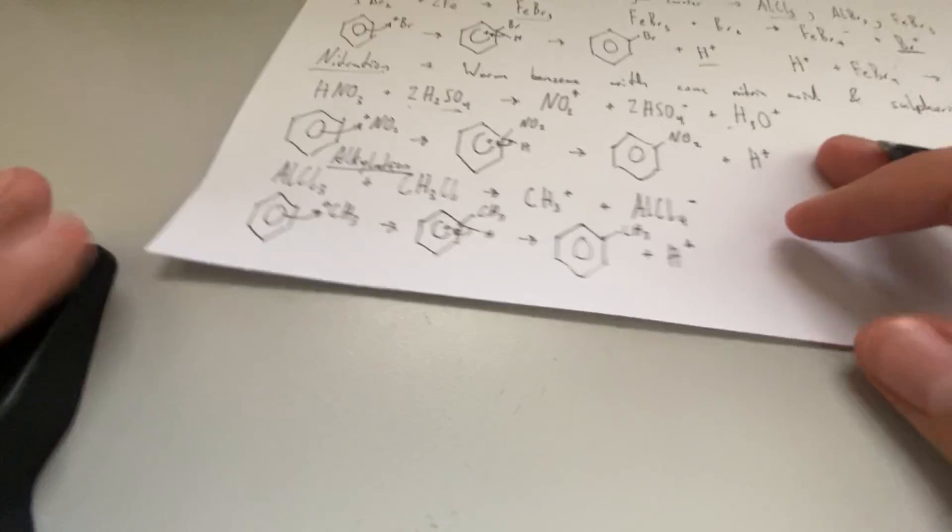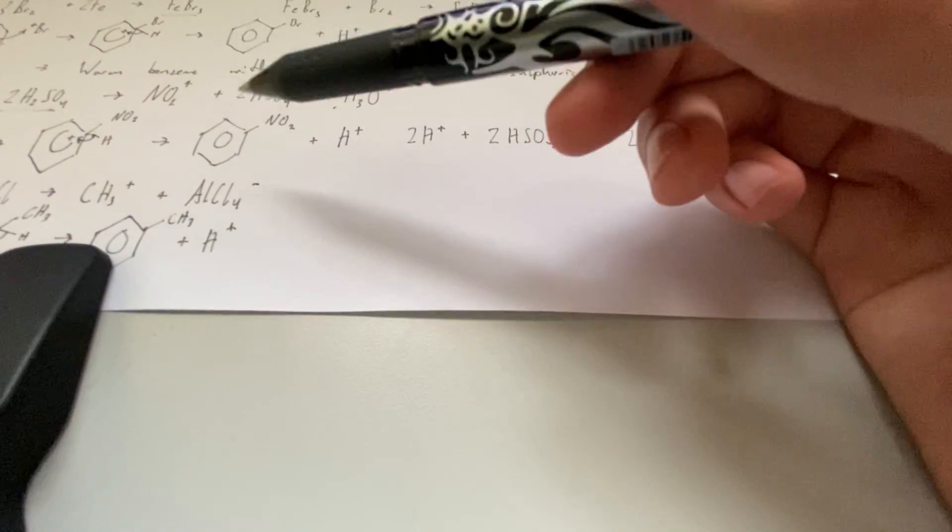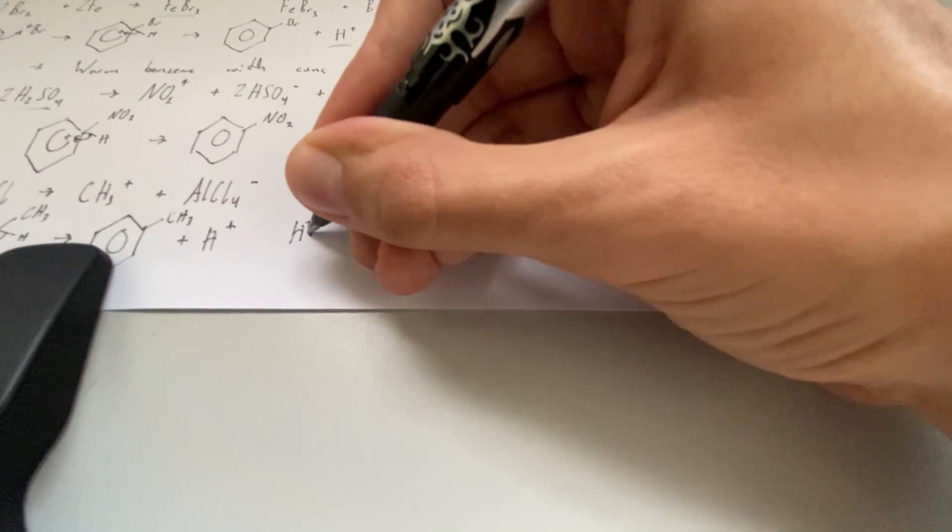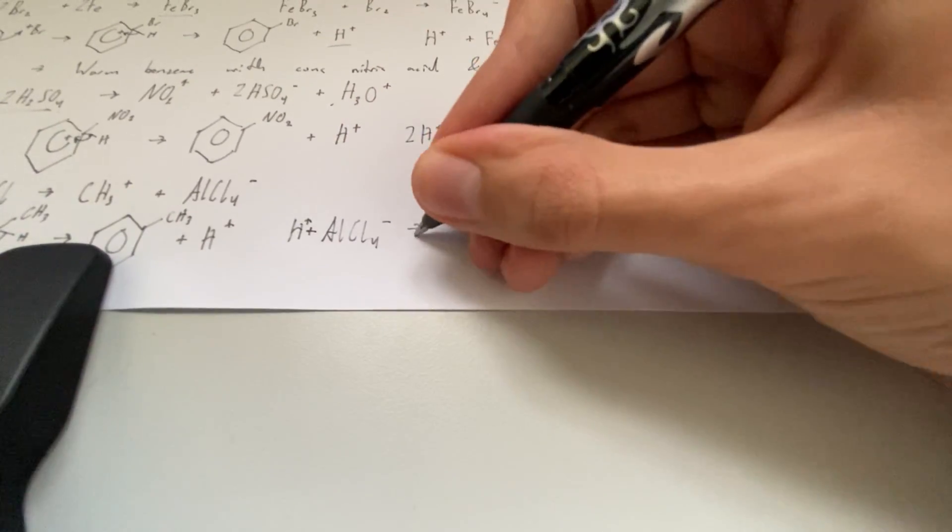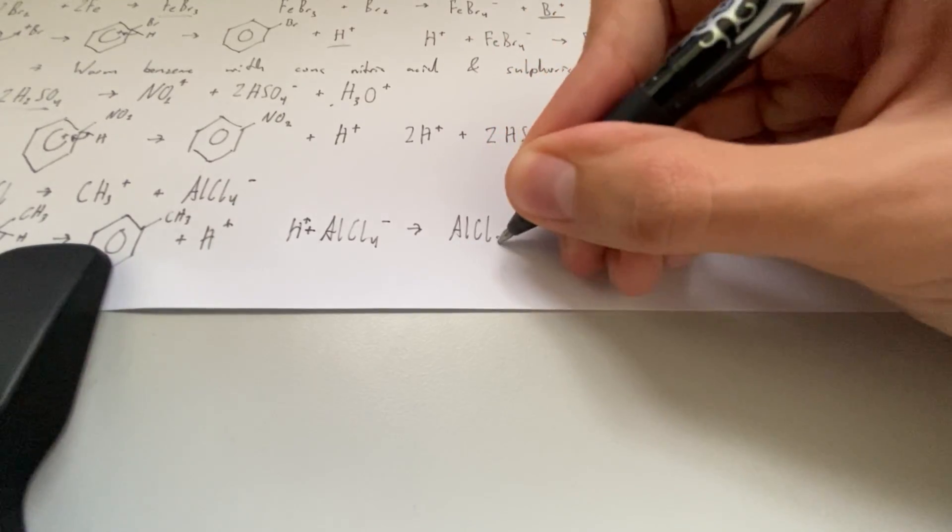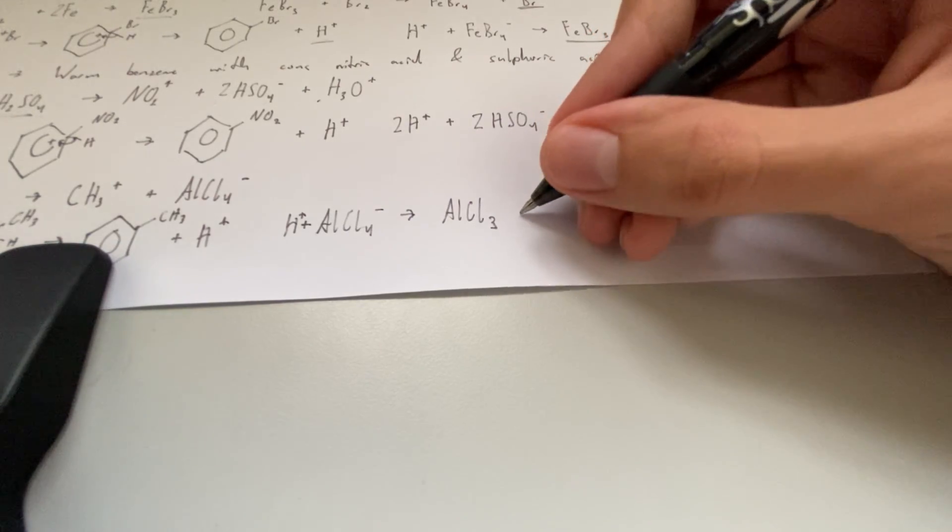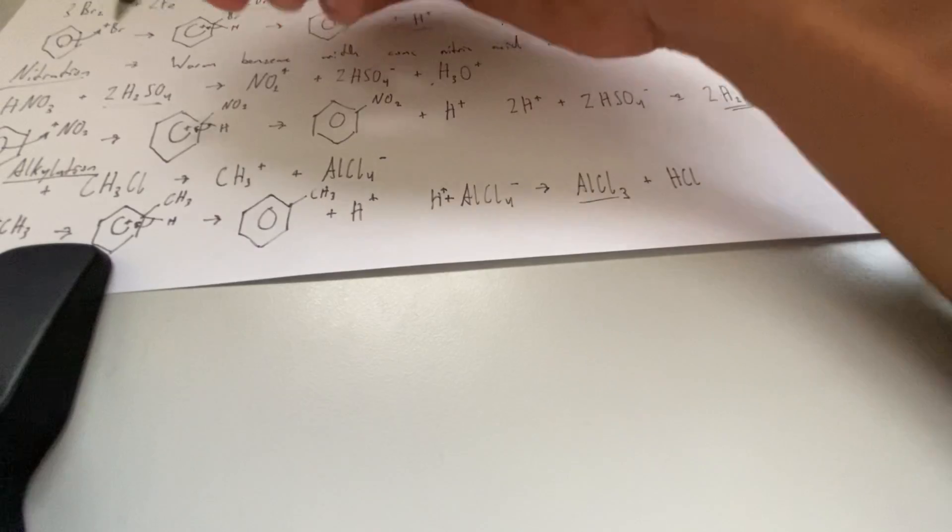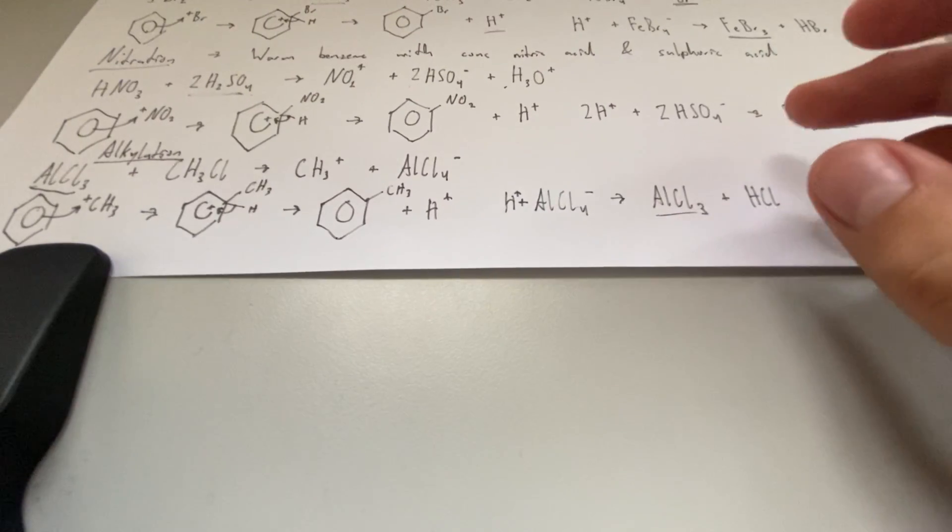The CH3 is just here. But if it's a skeletal formula, I doubt we need to draw it. Now that we have our H plus, we'll just react again with the AlCl4 minus. H plus plus AlCl4 minus gives you AlCl3, the original catalyst, and HCl. So we have it returned again. That was alkylation.